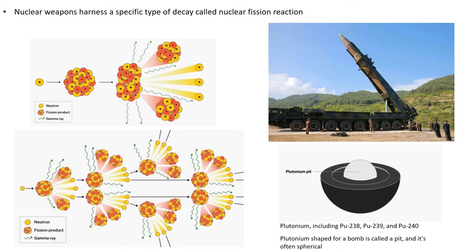Early nuclear scientists visualized the process of a fissioning nucleus as a liquid droplet being hit with just enough energy to resonate or vibrate itself apart, as shown in the picture. Plutonium is a metallic element that does not occur in nature and most often refers to the isotope plutonium-239, the go-to material for modern nuclear weapons.